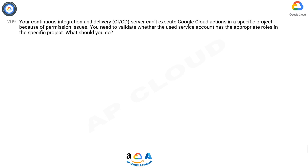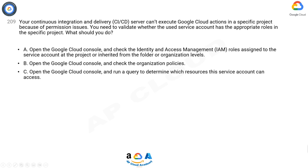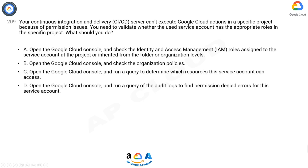Your continuous integration and delivery (CI/CD) server can't execute Google Cloud actions in a specific project because of permission issues. You need to validate whether the used service account has the appropriate roles in the specific project. What should you do?